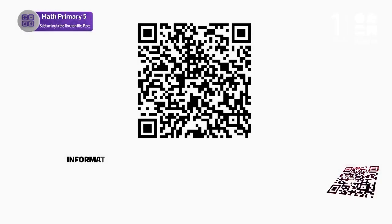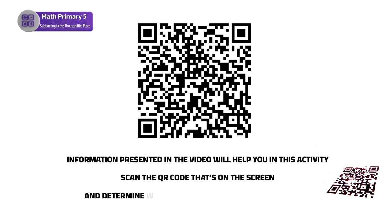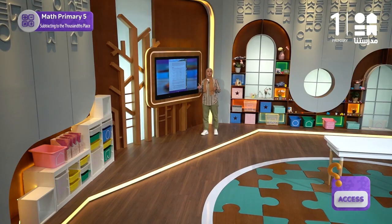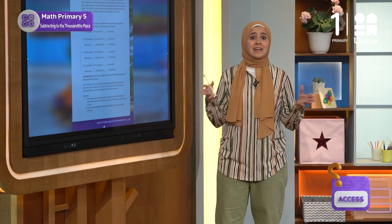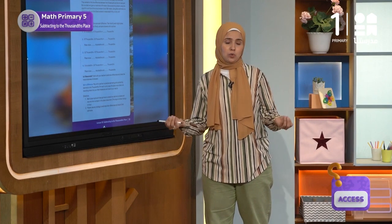The information presented in the video will help you in this activity. Scan the QR code on the screen and determine which of the four phrases is the wrong one. Now we have watched the video and checked how the delta was formed by the sediments carried by the river during its flow.